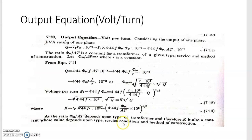Now, what to do with these output equations — you should also know how to calculate volt per turn, since you usually get numericals involving the output equation along with volt per turn of a given transformer. Considering the KVA output of one phase, the equation we have already derived shows that the ratio phi_M / AT is a constant for a transformer. The cross-sectional area and number of turns, once decided during design time, will not change with load current or flux. Let's name this constant as small r.